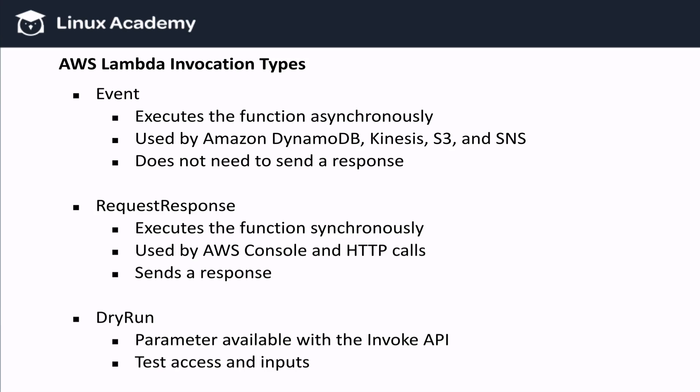One final point: there are two different invocation types — an event invocation and a request-response invocation. The event invocation type is asynchronous, which means it is not expected to return a response. This is actually the default type used for services. Request-response is synchronous, which means it is expected to return a result, and this is the default type used by the AWS console and HTTPS calls. When using the invoke API, you could also specify the dry run parameter, which will block the function from actually executing. This is really useful for testing permissions and inputs to see if they succeed or not.